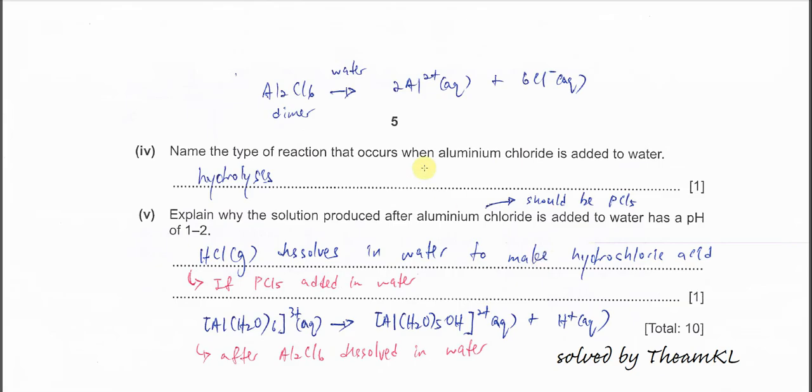Part 4. Name the type of reaction that occurs when aluminum chloride is added to water. Aluminum chloride exists as a dimer, Al2Cl6. When it dissolves in water, it's hydrolysis because the bonding breaks. This is a dimer and it has a covalent bond between aluminum and chlorine. It involves bond breaking and forms this aluminum ion, Al3+, and chloride. So the type must be hydrolysis.